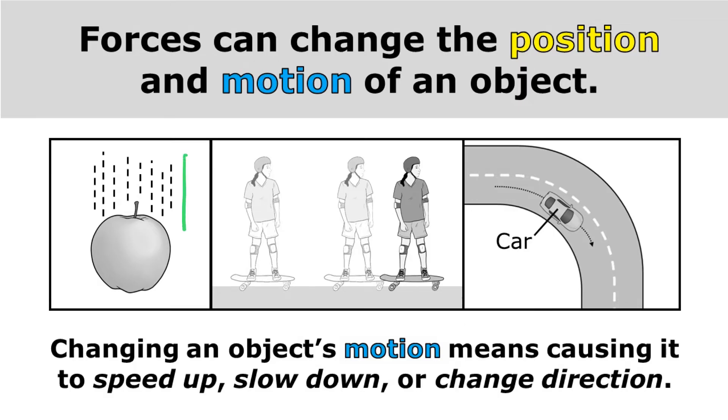As the apple falls, the force of gravity is causing the apple to speed up. The force of friction is causing this girl on the skateboard to slow down. And the forces acting on this car are allowing it to change direction.